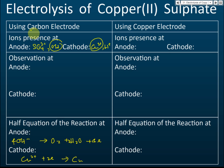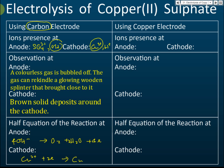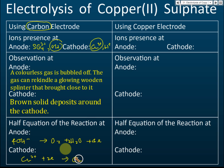At the cathode, copper is selected and forms copper metal. The observations when using carbon electrodes are: oxygen gas is released — a colorless gas that can relight a glowing wooden splint — and brown solid copper metal deposits around the cathode.